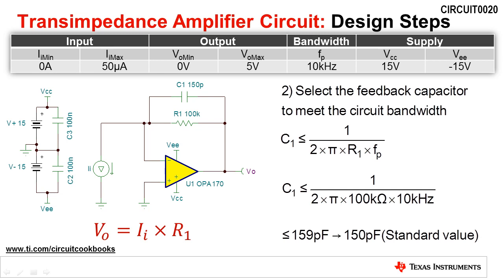The value of the feedback capacitor should be less than 1 divided by 2 times pi times R1 times Fp, where Fp is the required bandwidth. This calculation results in a value of 159 picofarads, but we selected 150 picofarads because it is a standard capacitor value.